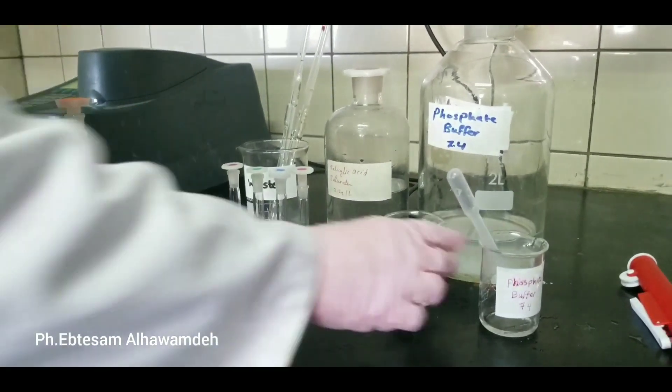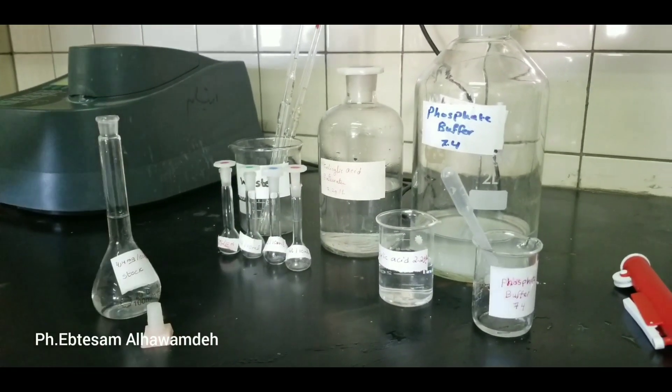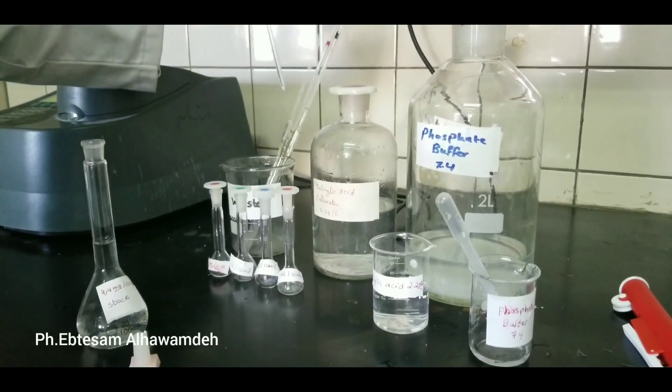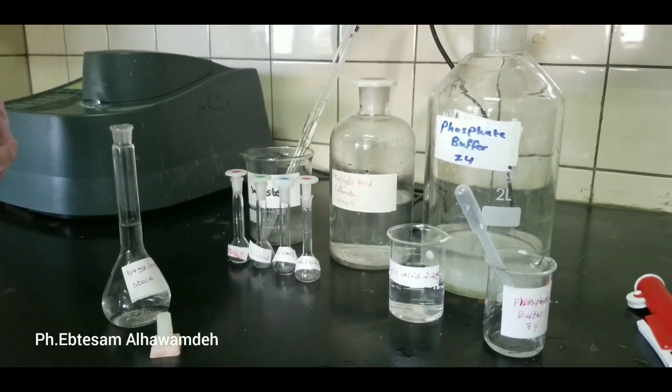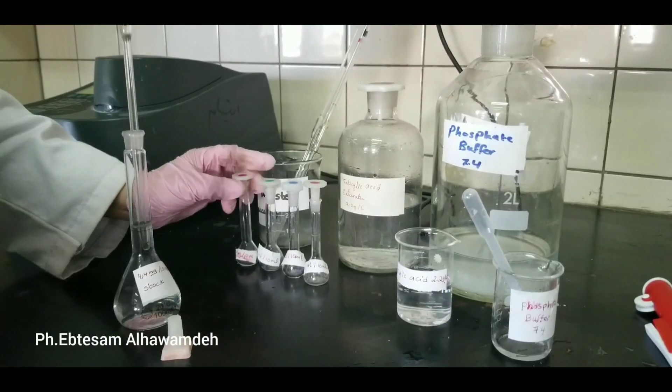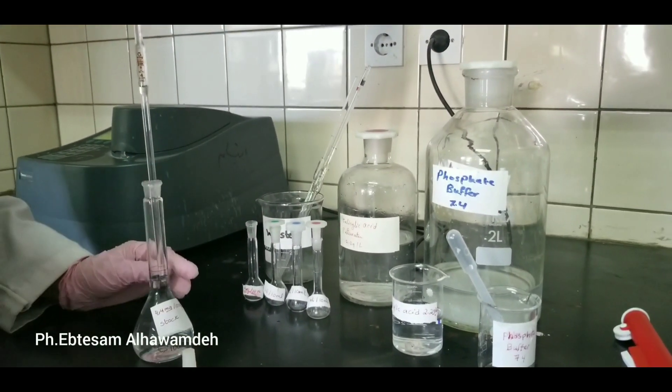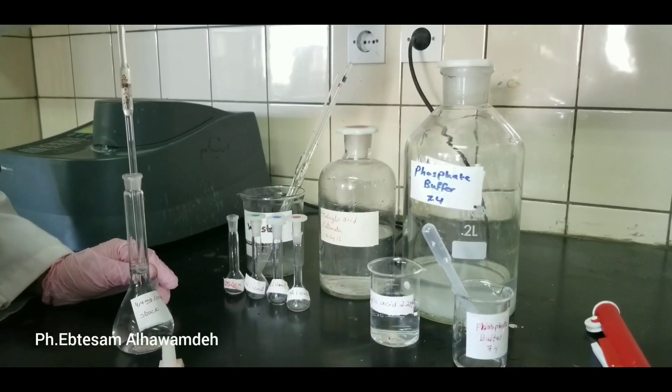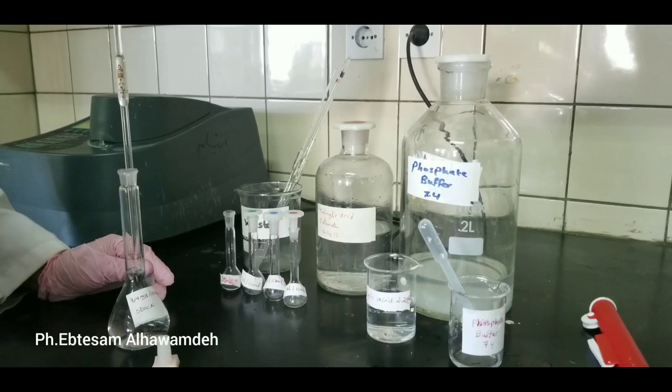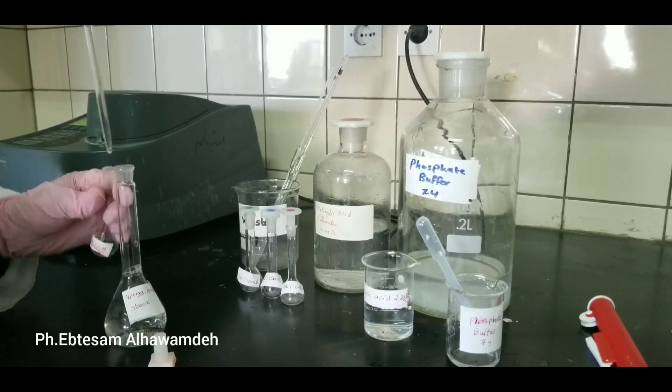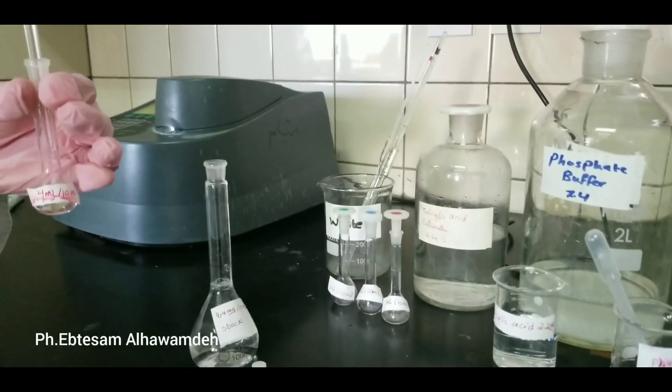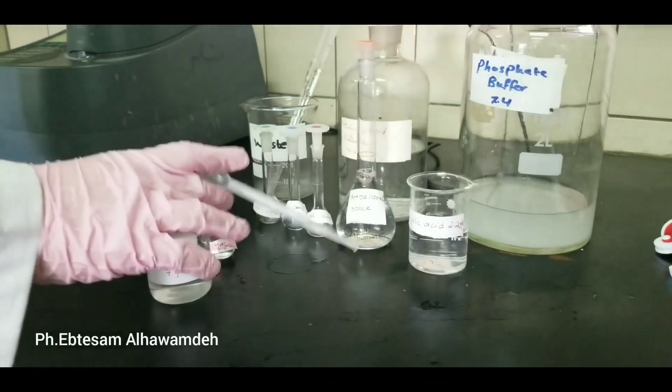From the resulting solution, take 1, 2, 3, and 4 ml and dilute each up to 10 ml using phosphate buffer. I will prepare, for example, 4 ml and dilute it up to 10 ml using phosphate buffer.